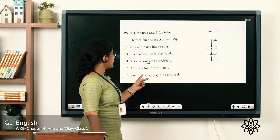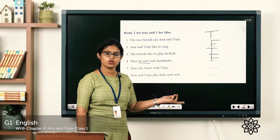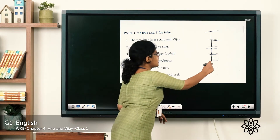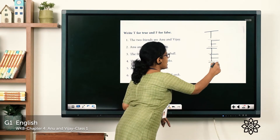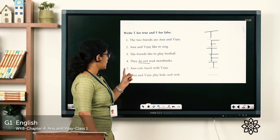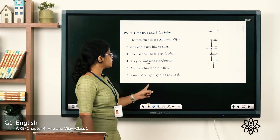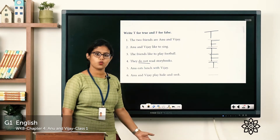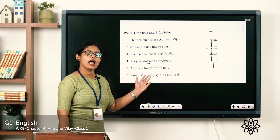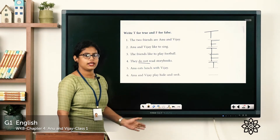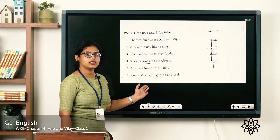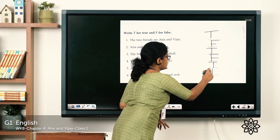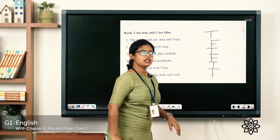'Anu eats lunch with Vijay' — what is the answer? The answer is true; they have lunch together. 'Anu and Vijay play hide and seek' — what is the answer? The answer is true; they play hide and seek together. Write T.